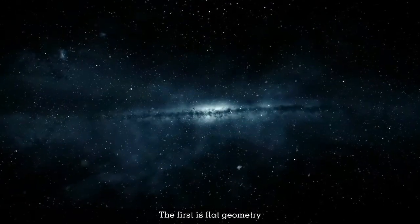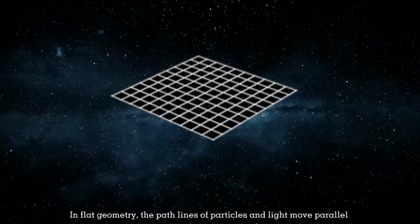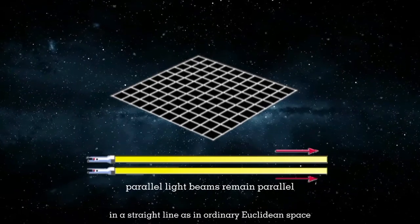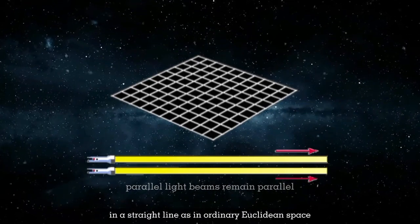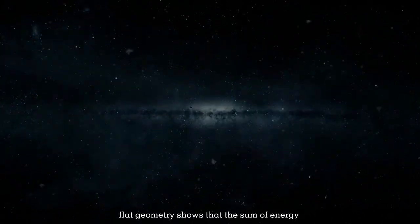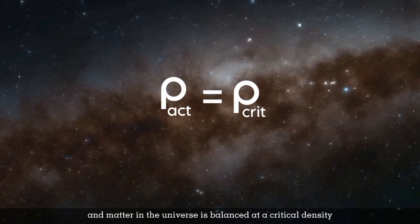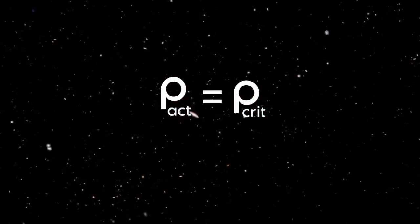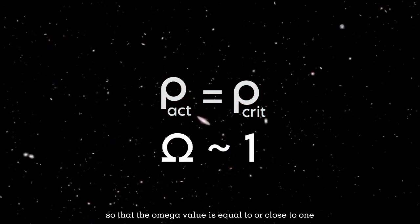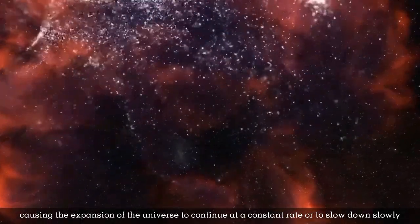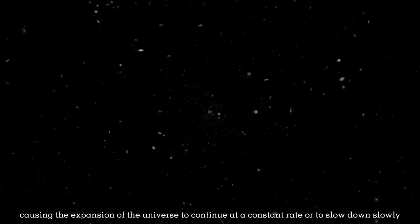The first is flat geometry. In flat geometry, the path lines of particles and light move parallel in a straight line as in ordinary Euclidean space. Flat geometry shows that the sum of energy and matter in the universe is balanced at a critical density, so that the omega value is equal to or close to 1, causing the expansion of the universe to continue at a constant rate or to slow down slowly.